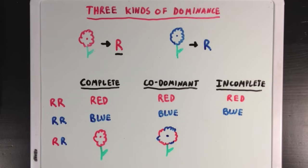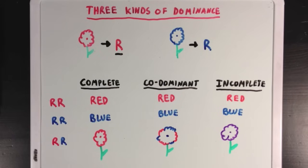Incomplete dominance is when the heterozygous phenotype shows a mixture of the two alleles. In this case, the red and blue flower petals combine to form a purple flower. Neither allele is completely dominant over the other — instead, the two alleles, being incompletely dominant, mix together.